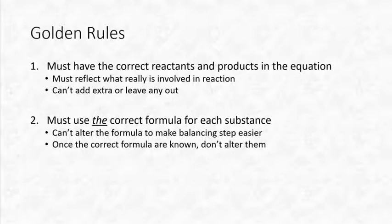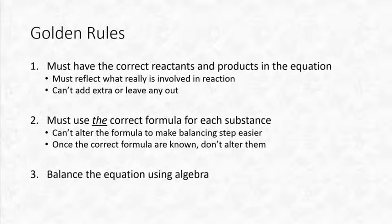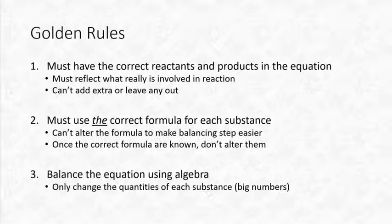Once we have the correct formulas, we mustn't alter them. We can then balance the equation using algebra, and at that point we can only change the quantities of each substance — those are the big numbers in front of each formula.